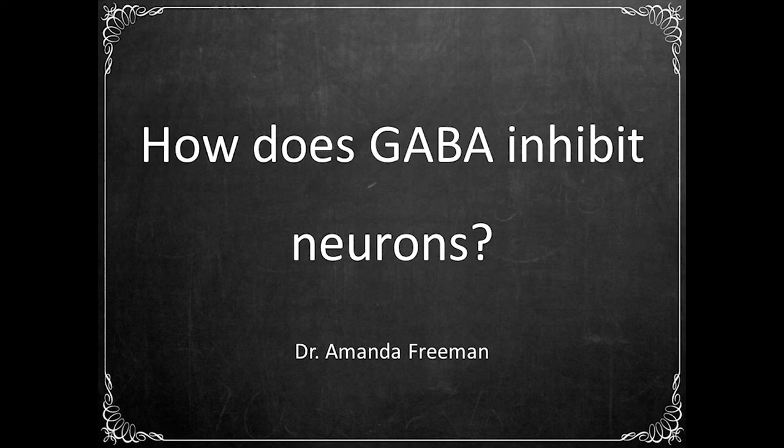The most common way for neurons to communicate with other neurons is through the release of a neurotransmitter, which conveys a message from the presynaptic neuron to the postsynaptic neuron. In order to release neurotransmitter, the neuron must be activated. When a neuron is not active, we say that it is in a resting state.